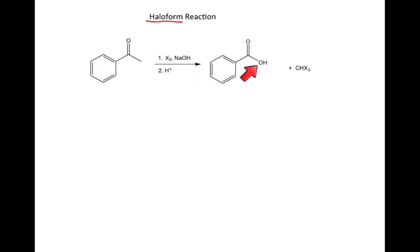we're going to get out a carboxylic acid. The methyl group is lost from the main carbon chain and replaced with an OH. So we're breaking a carbon-carbon bond in this reaction to produce a new carbon-oxygen bond. The carbon that we've lost forms what we call a haloform — chloroform if chlorine, bromoform if bromine, or iodoform if iodine.